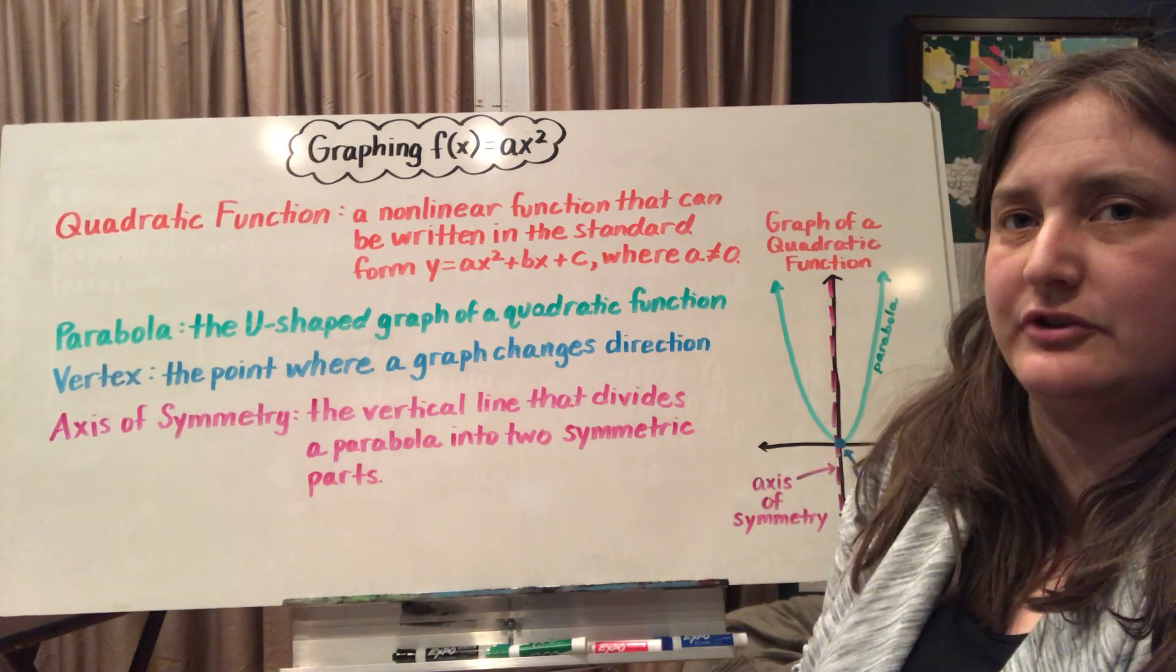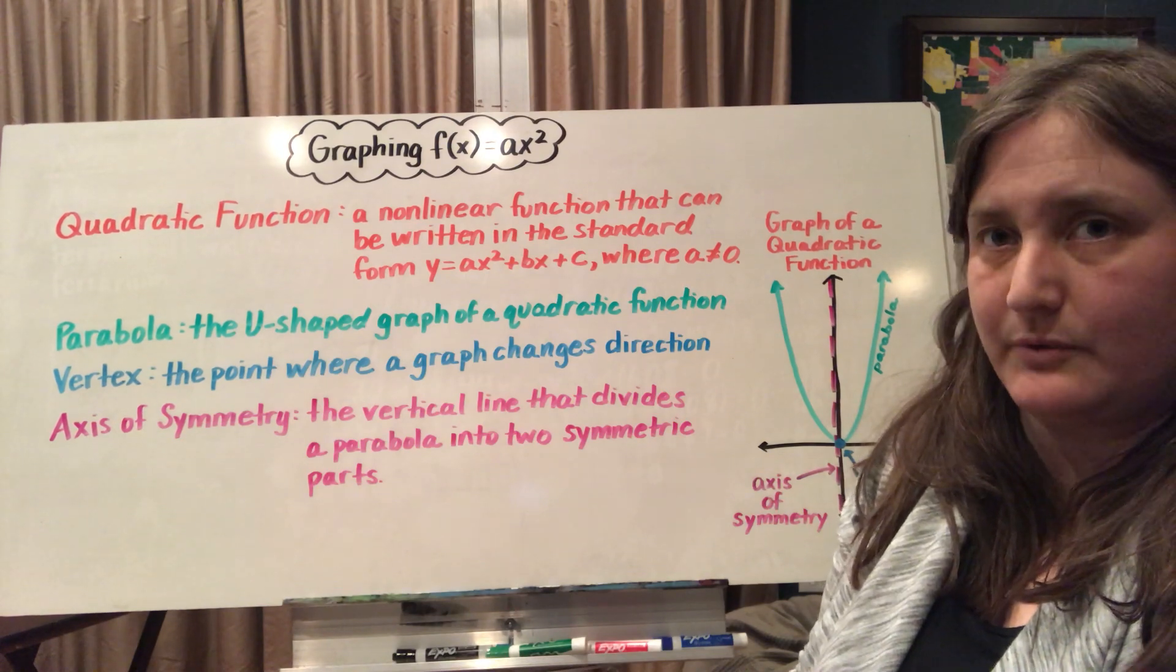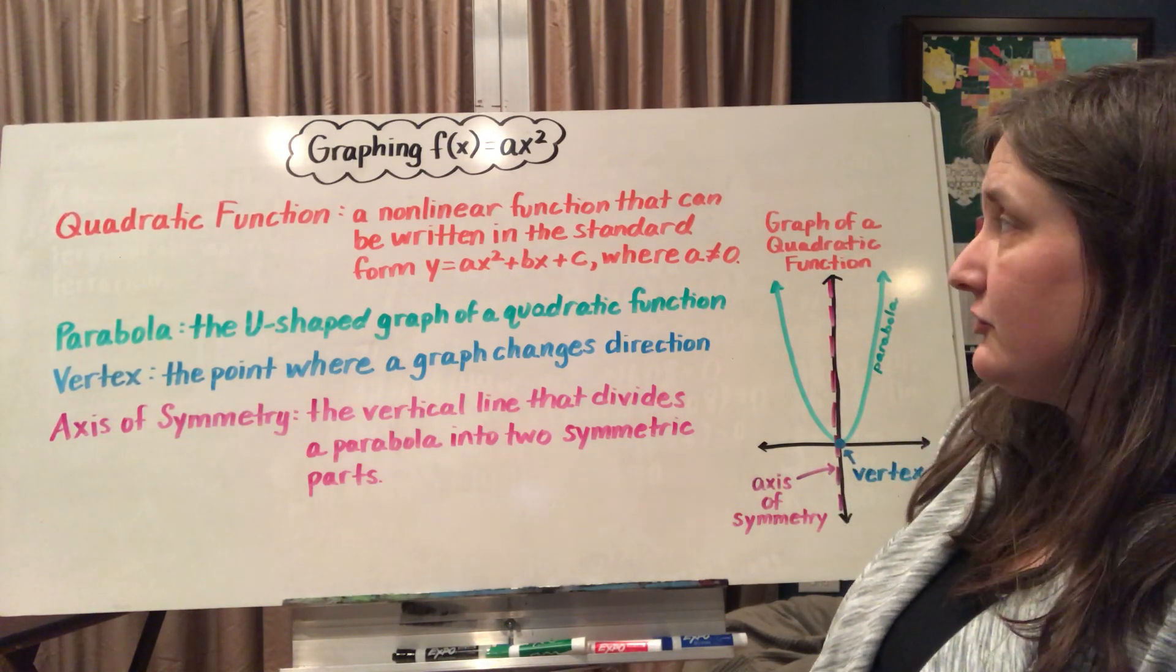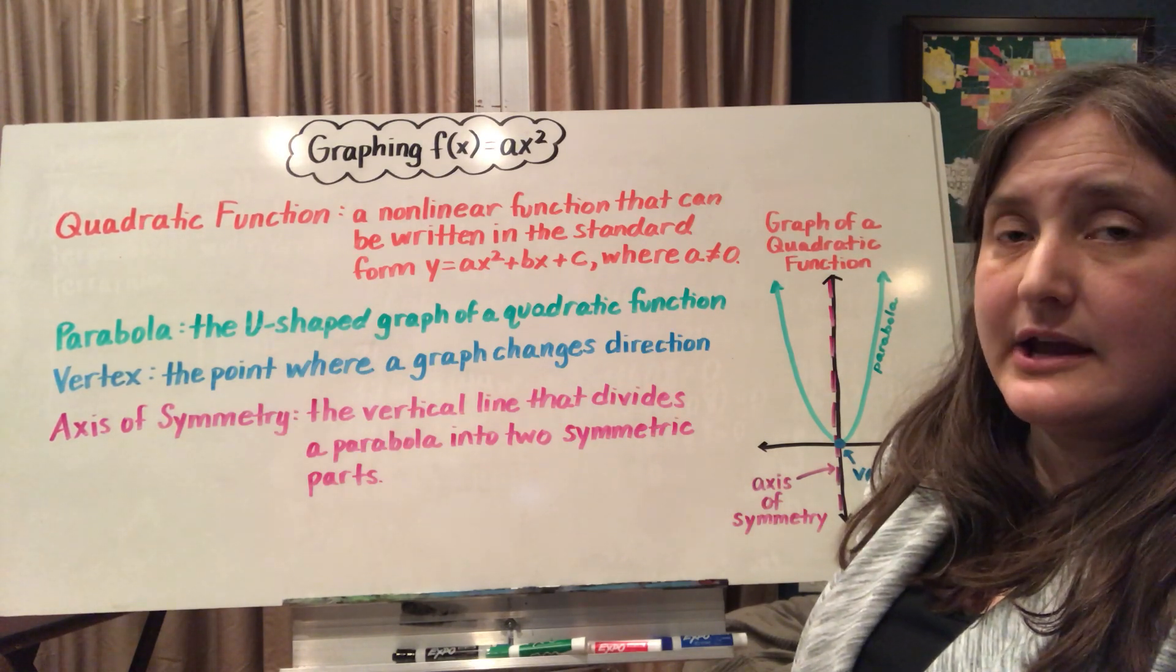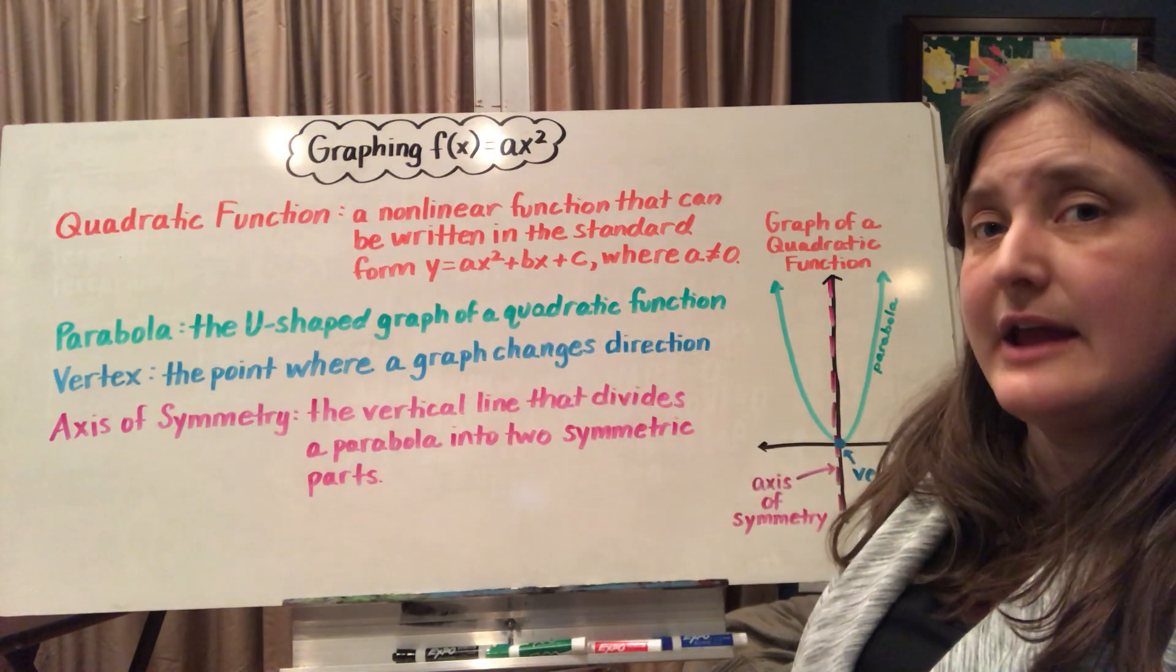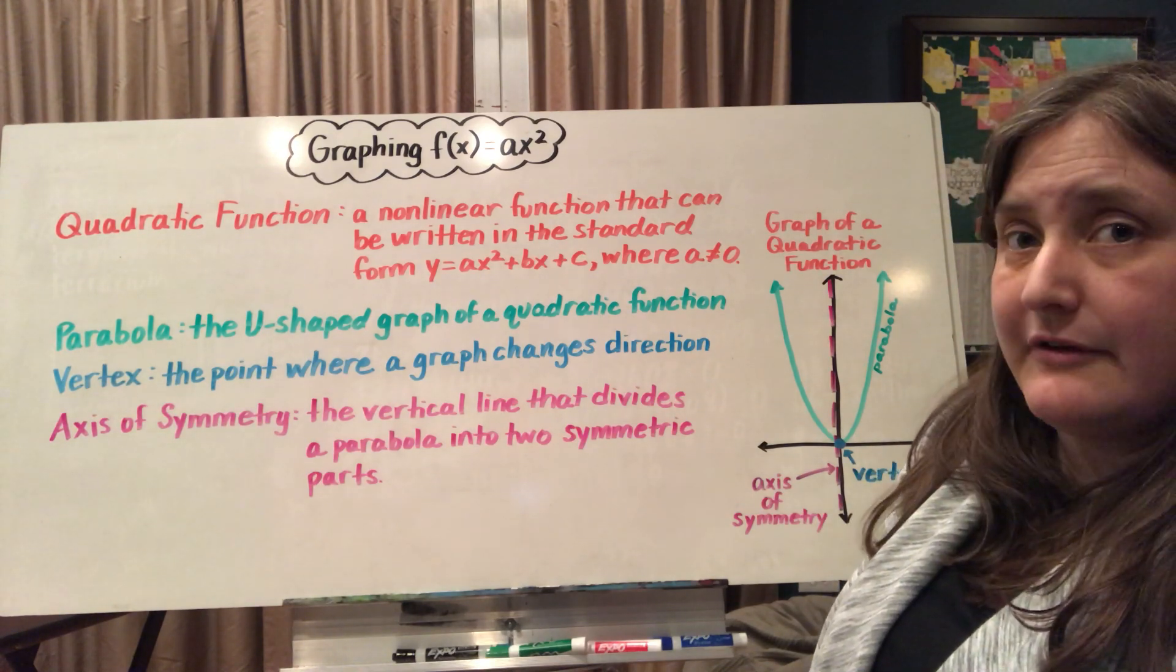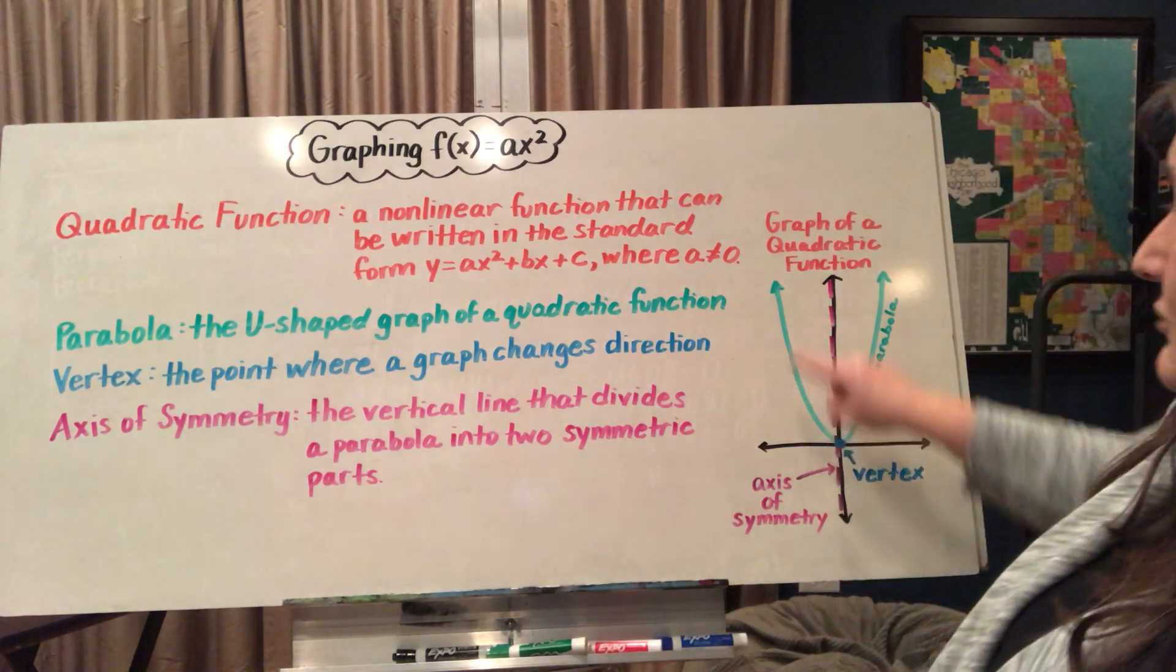This is graphing equations in the form of f(x) equals a times x squared. A quadratic function is a nonlinear function that can be written in the standard form of y equals ax squared plus bx plus c, where a, this coefficient, cannot equal zero. A quadratic function, when graphed, is in the form of a parabola. It's a u-shaped graph.